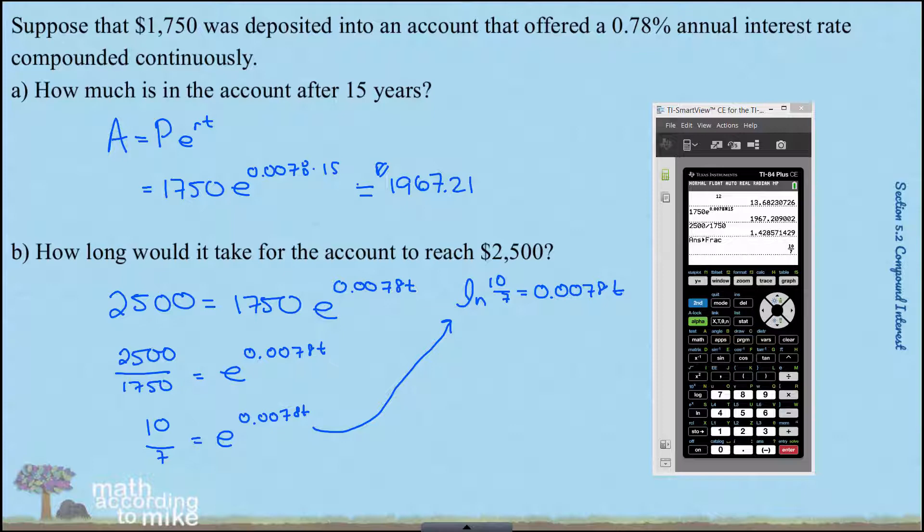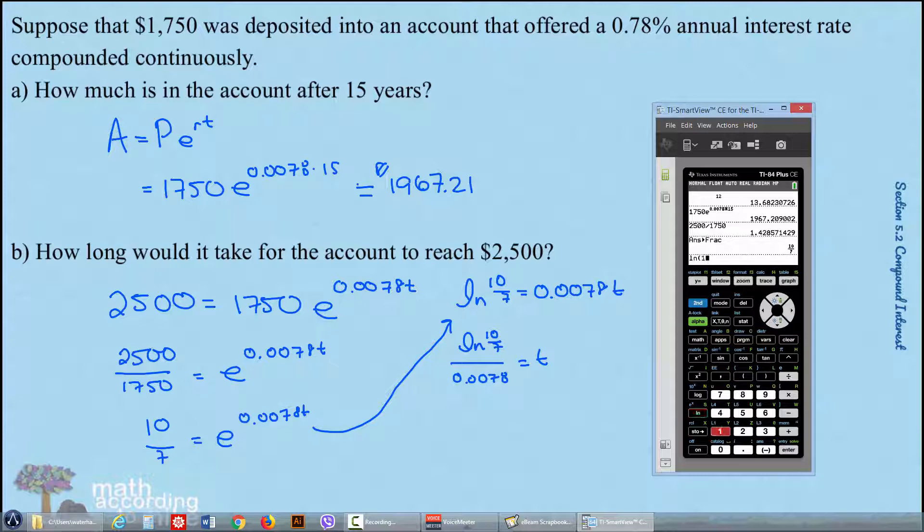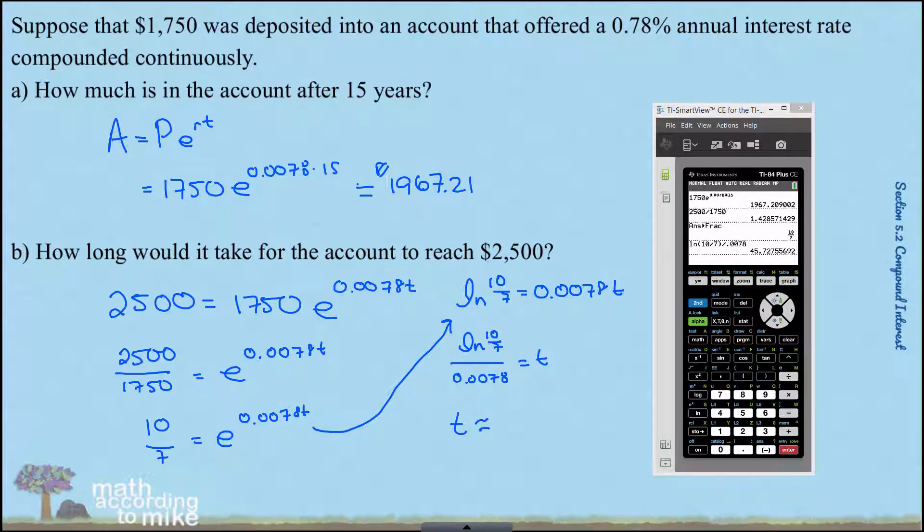And then to finish off, divide by that decimal to get T's value. So we'll say the natural log of 10 sevenths divided by all that good stuff. So when T is approximately 45 point, we'll go to one place, seven years.